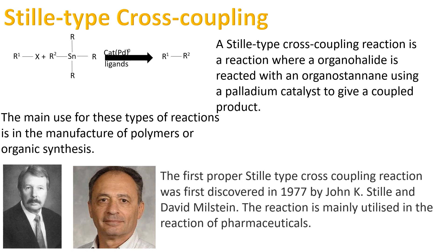If you look in the top left, you can see the general reaction scheme. We have the organohalide, which you can see is R1 — the halide group of that compound gets replaced with R2 of the tin complex. The main use for these types of reactions is in the manufacture of polymers and organic synthesis.